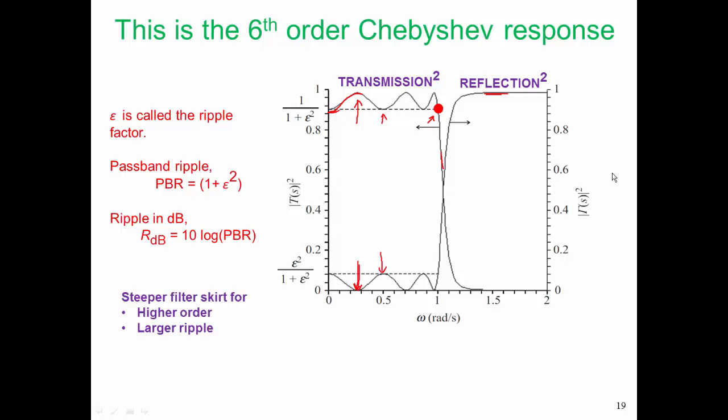If we want steeper filter skirts, we can achieve that by either having a higher order filter, or having a large ripple.